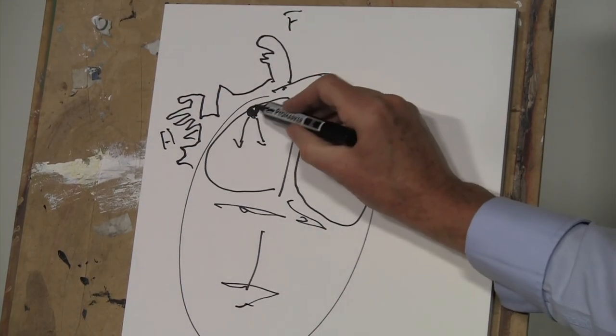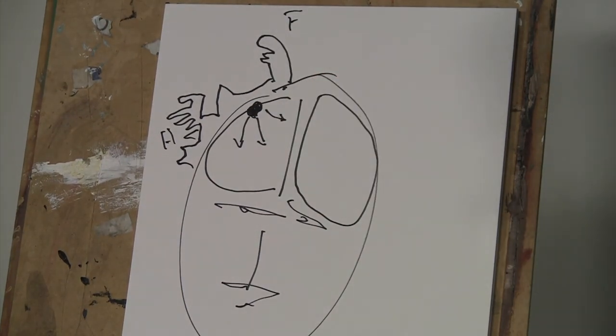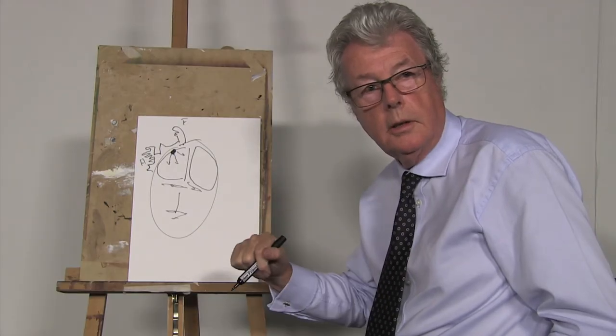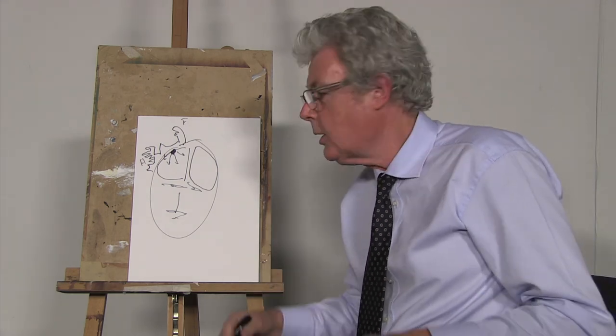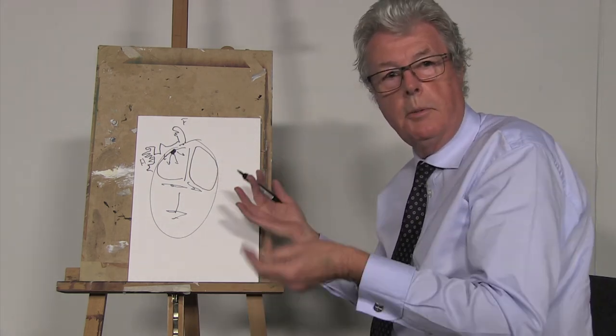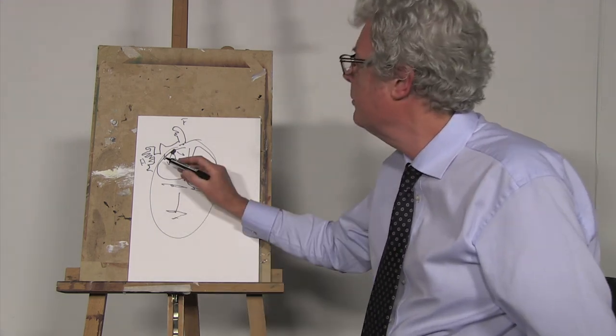And so if an epileptic focus starts in the top, the foot area, the person will have jerking of the foot. And if the epileptic discharge goes to the hand, it will go from the foot to the hand. And so I'm drawing the diagram so they can have a representation in the brain of what actually happens in the patient themselves. And that's a focal epilepsy.